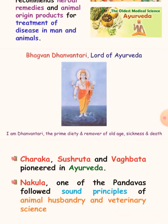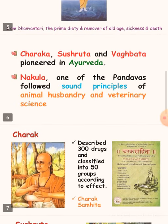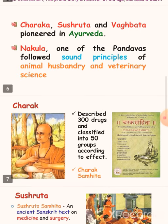Bhagwan Dhanvantari is known as the Lord of Ayurveda. Charaka, Sushruta, and Vagbhata are the pioneers in Ayurveda. Nakula, one of the Pandavas, followed sound principles of animal husbandry and veterinary science.